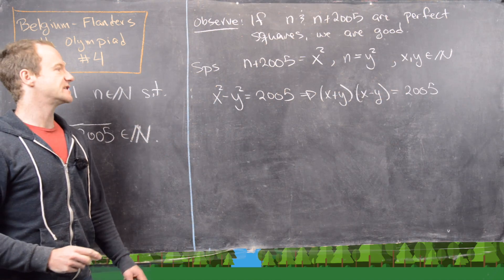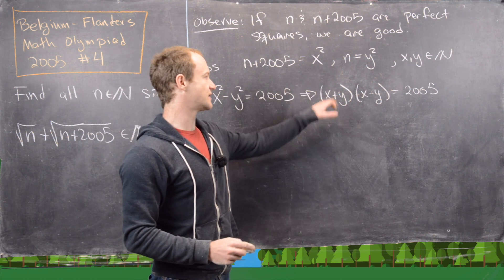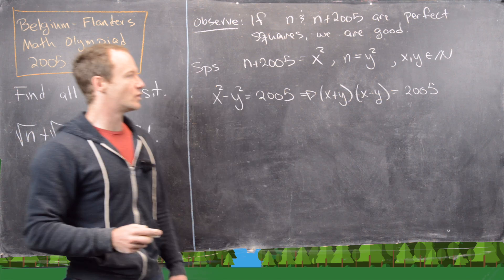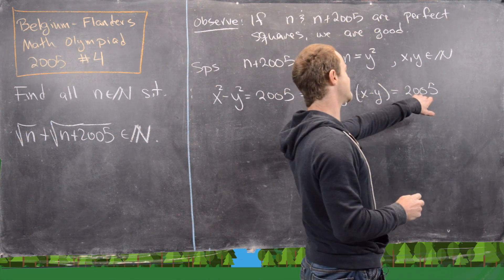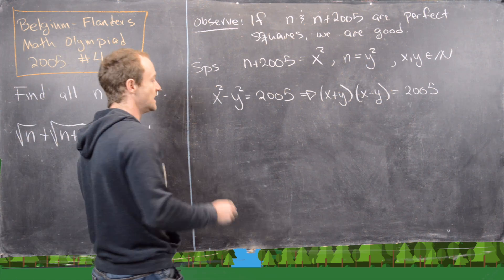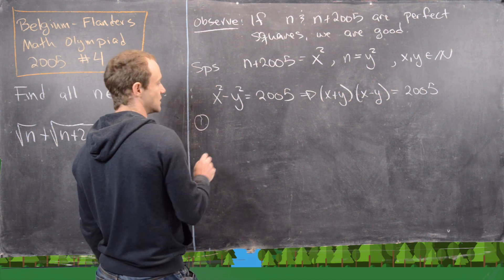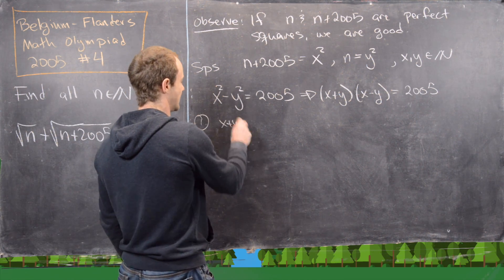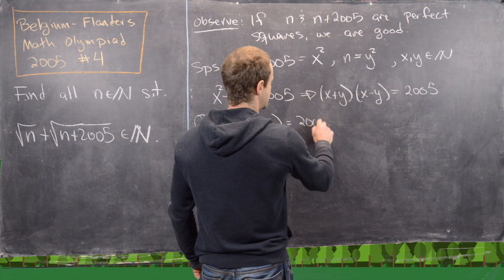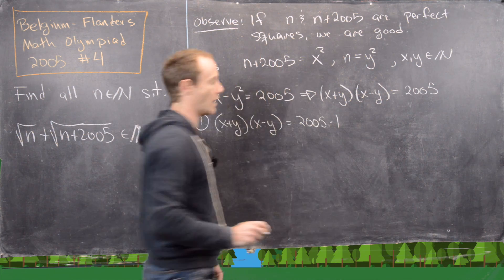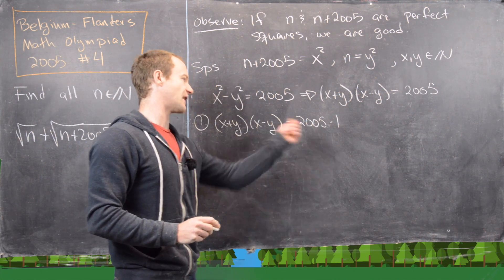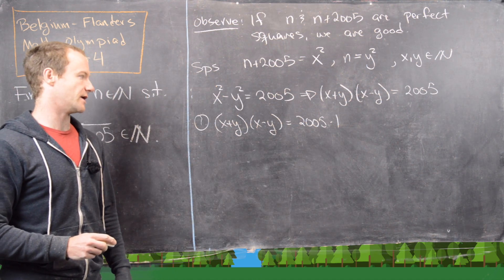Since x and y are natural numbers, x + y and x - y are also natural numbers, which means we should look at the factorization of 2005. The first way to factor it is (x + y)(x - y) = 2005 × 1, so the larger factor is 2005 and the smaller is 1.